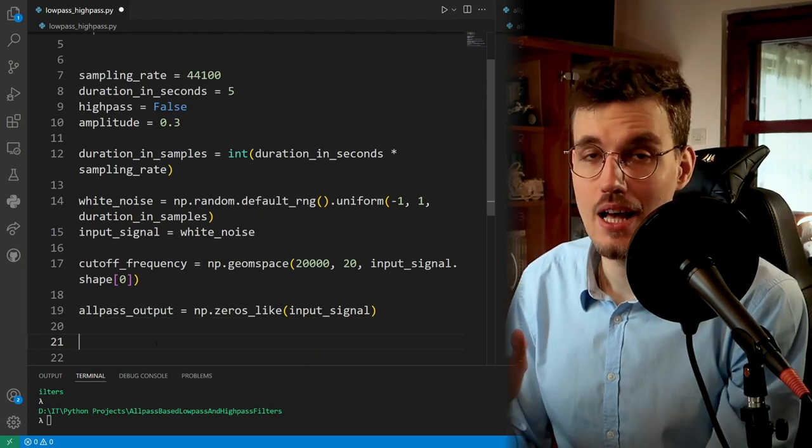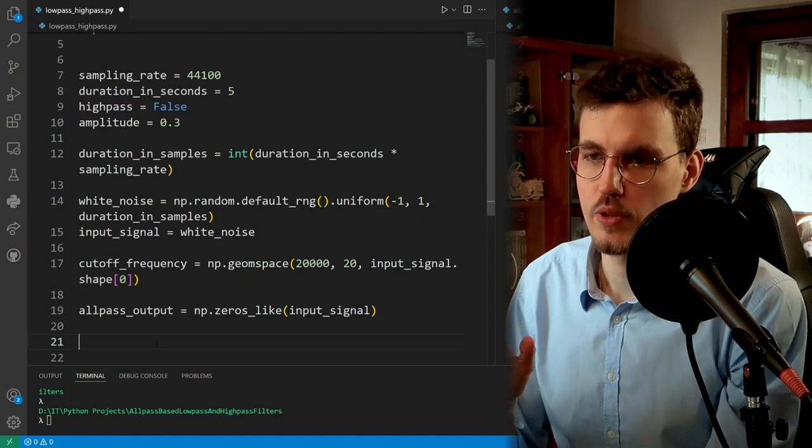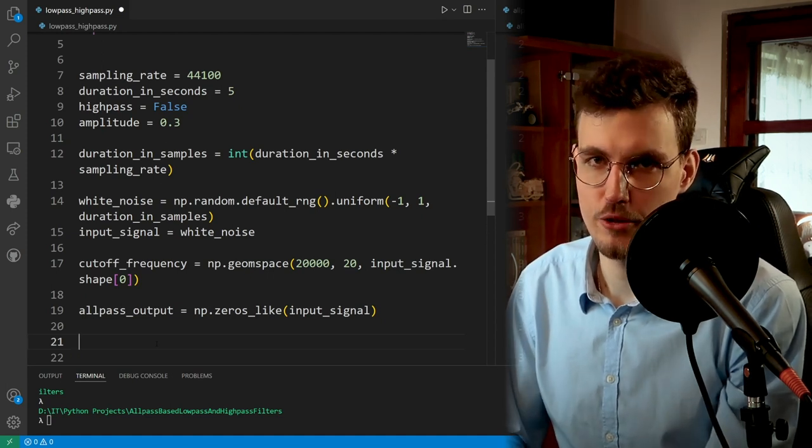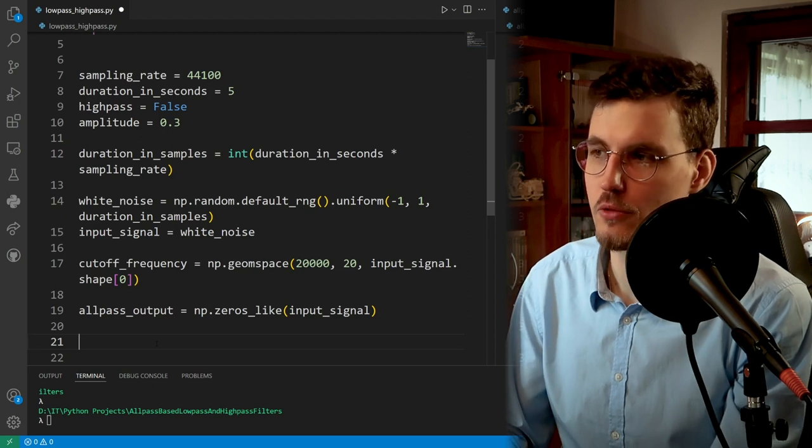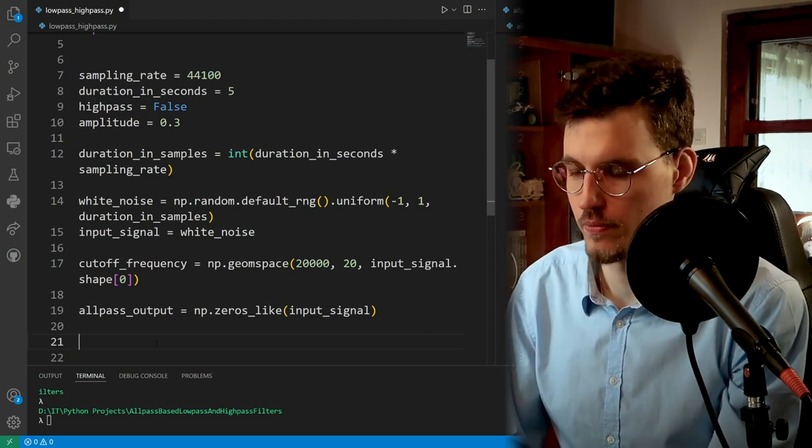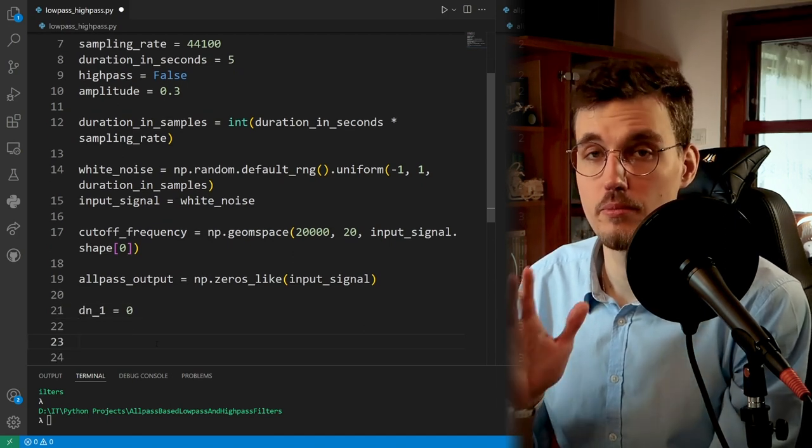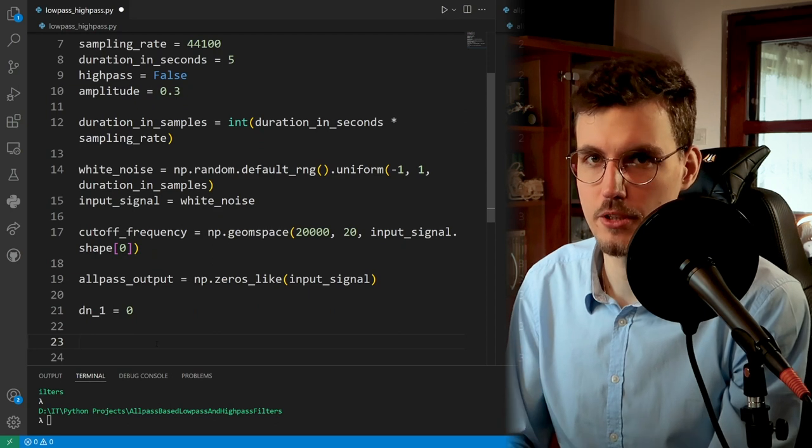Okay, now we'll allocate an array for the output of our processing. And here comes the all-pass filter implementation. So first, we need to define an inner buffer of our all-pass filter. And I will denote this by dn1. And we'll initialize it to 0.